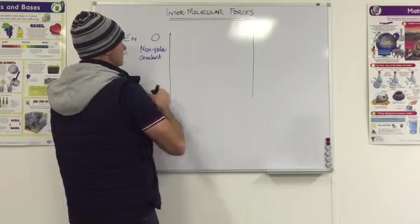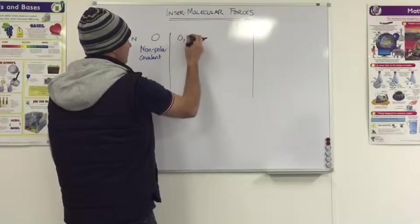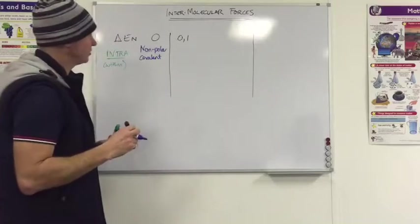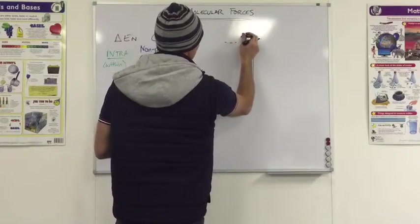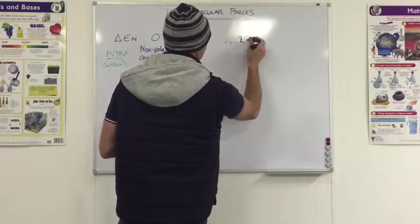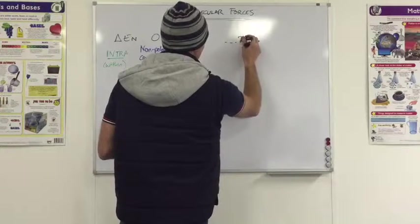As soon as there's a difference, as I said, some schools take it as 0.4. For the purposes of this, I'm going to consider a difference to be a difference. So from 0.1 all the way up to about 2 or 1.9, again, schools differ. So I'm going to put 2 there for now.